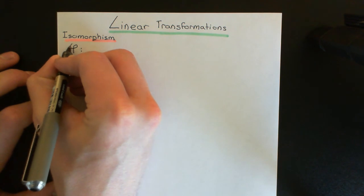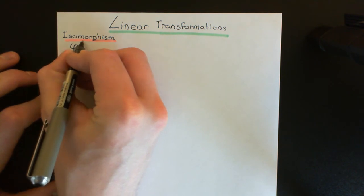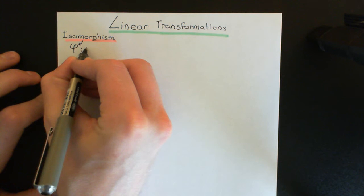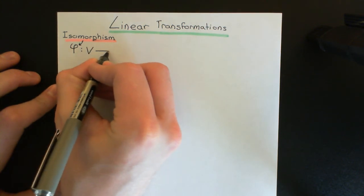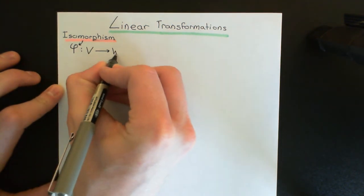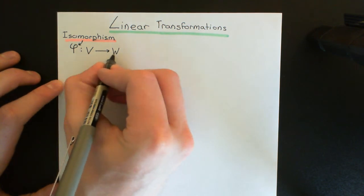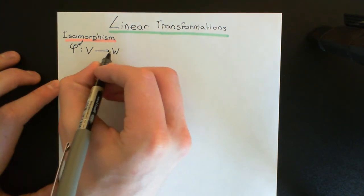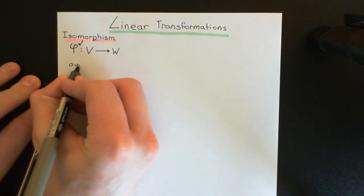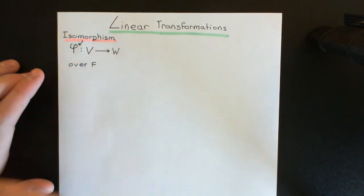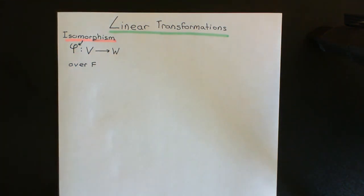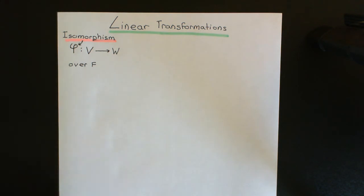The isomorphism, which we'll denote phi initially, is going to be a mapping between one vector space, capital V, and another vector space, capital W. The thing that these two vector spaces must have in common is that they're both over some field, capital F. So they have to be vector spaces over the same field. This concept doesn't work if V is a vector space over the real numbers and W is a vector space over the complex numbers — they have to be over the same field.